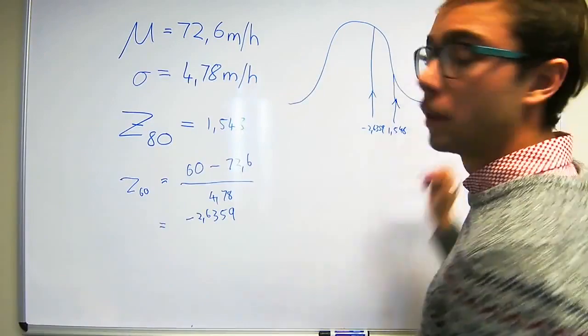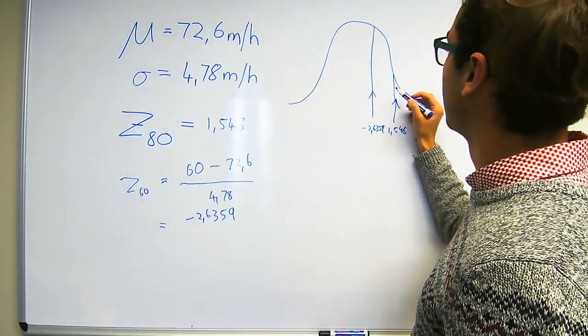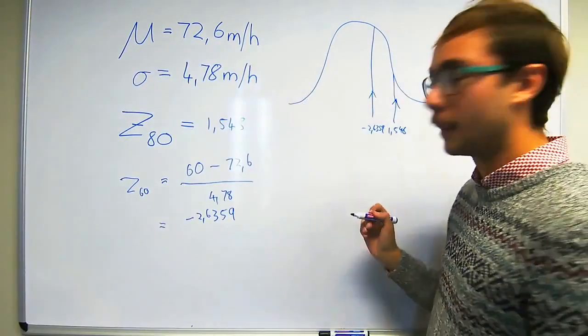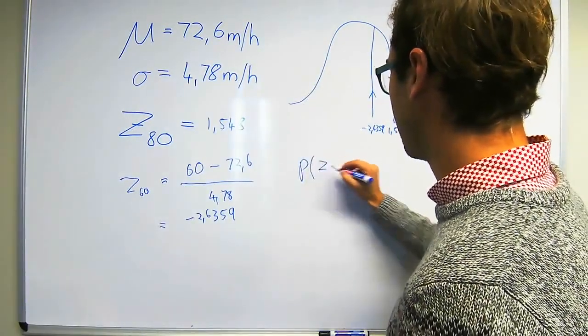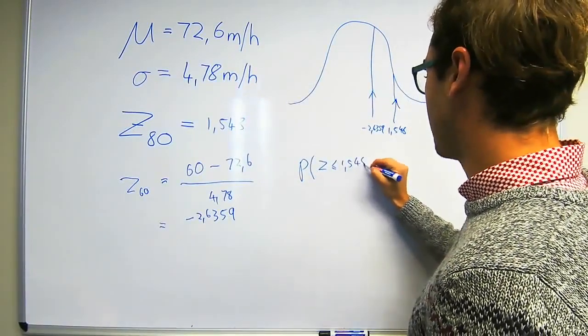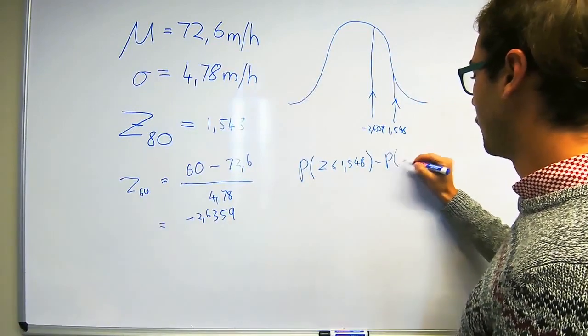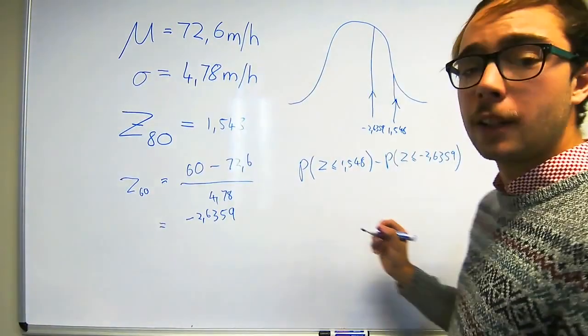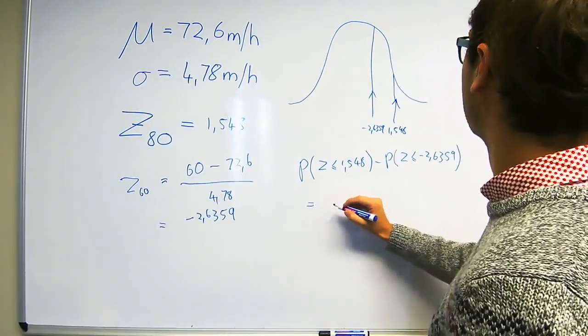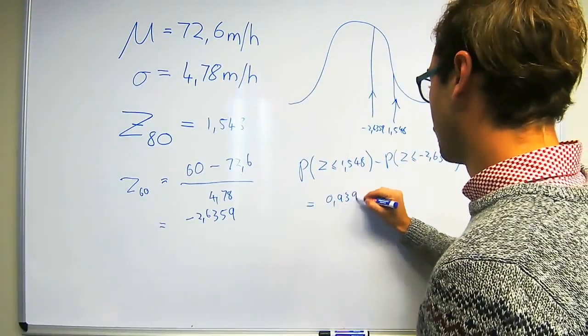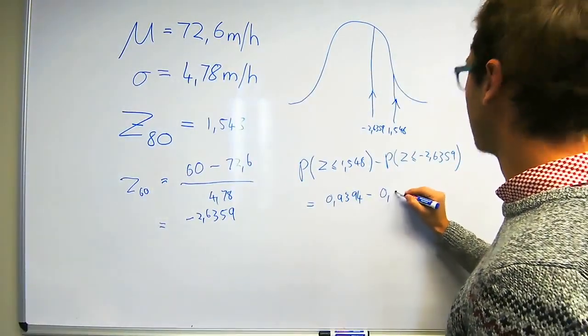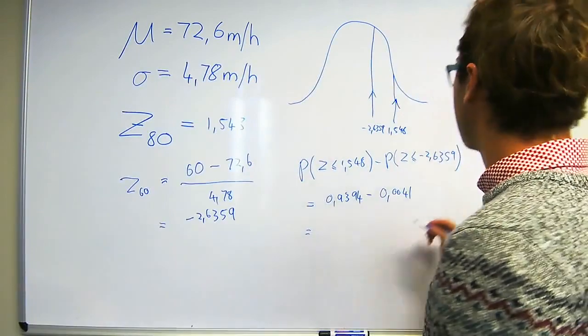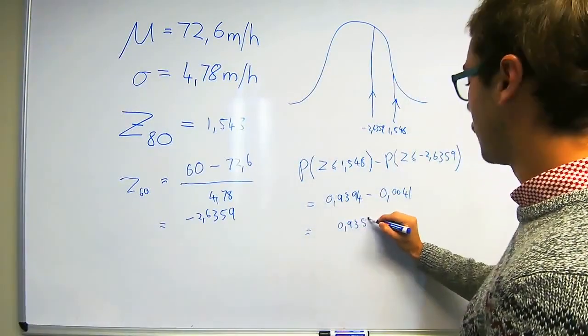Effectively, what we're trying to do is to find the area between those two lines. As we know, the Z-table gives us the probability of being less than that Z-value. So in essence we're going to take the probability of this minus the probability of that. It's going to be the probability of Z less than or equal to 1.548 minus the probability of Z less than minus 2.6359. When we go and find those probabilities in our Z-table, we get 0.9394 minus the probability of that which is 0.0041. So the probability of the vehicle traveling between 60 and 80 miles per hour is 0.9353.